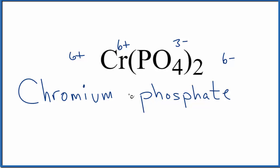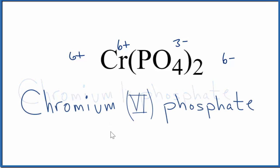And we're going to write that between these two names. So we put a Roman numeral six between the chromium and the phosphate, and the name for Cr(PO4)2 is chromium six phosphate. If you were given the formula and asked to write the name, you know the chromium would have a six plus on it, so you'd need two of these phosphate ions to balance the charge.